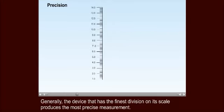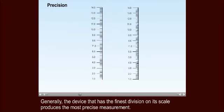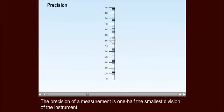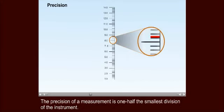Generally, the device that has the finest division on its scale produces the most precise measurement. The precision of a measurement is one half the smallest division of the instrument.